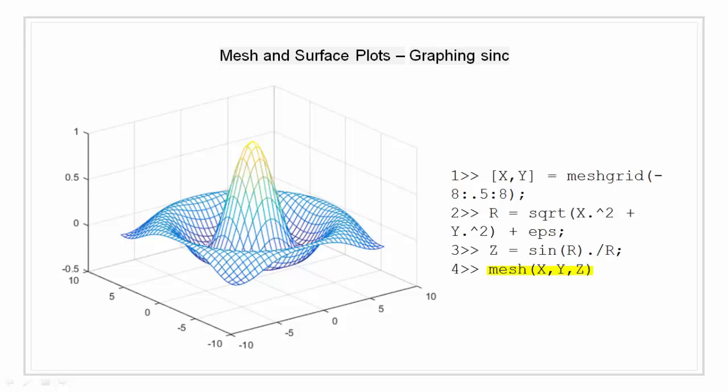By default, MATLAB uses the current color map to color the mesh. The EPS is added to have a completely unbroken surface because at 0, r becomes 0, so there will be a hole in the surface. So just to fill that surface, we are using EPS.